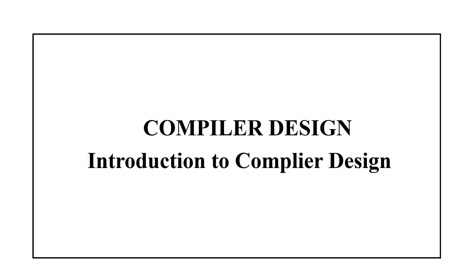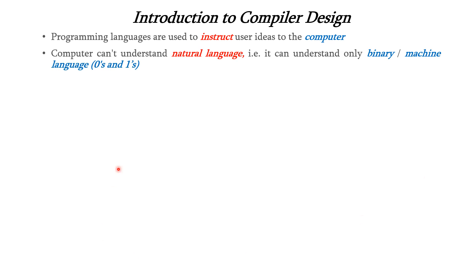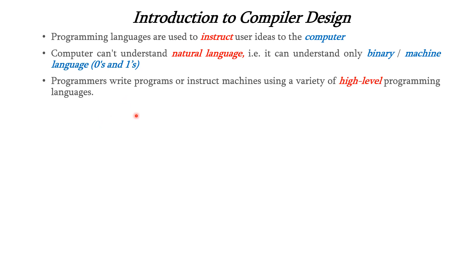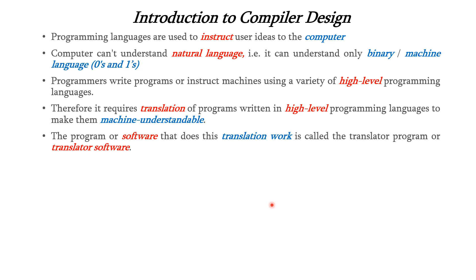Hello everyone. In this lecture we are going to see about Introduction to Compiler Design. Generally, users or programmers instruct their ideas to the computer using programming languages. Computers will not understand the natural language. It can understand only binary or machine language which is in the form of zeros and ones. Programmers will write their programs using a variety of high-level programming languages. Therefore, it requires translating these high-level programming languages into machine language so that it can be understandable to the machine. The program or software that performs this translation work is called a translator program or translator software.